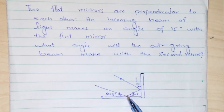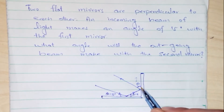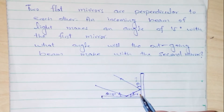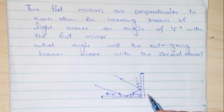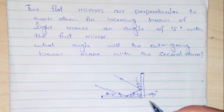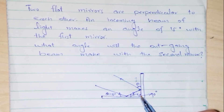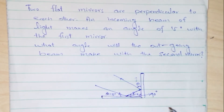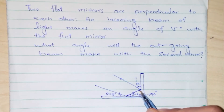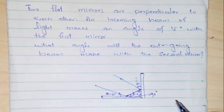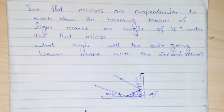After reflecting from this first mirror, this light forms a triangular shape with the second mirror. The angle between mirror one and mirror two is equal to 90 degrees because these two mirrors are perpendicular to each other. In this triangular shape we know about two angles: theta one is equal to 15 degrees and theta two is equal to 90 degrees, while this third angle, theta three, is unknown.